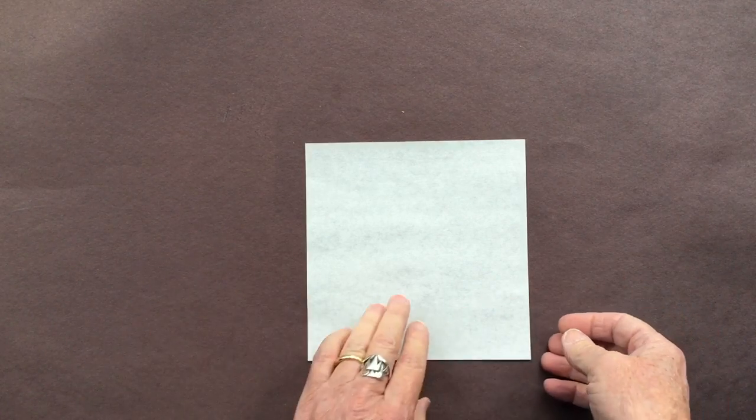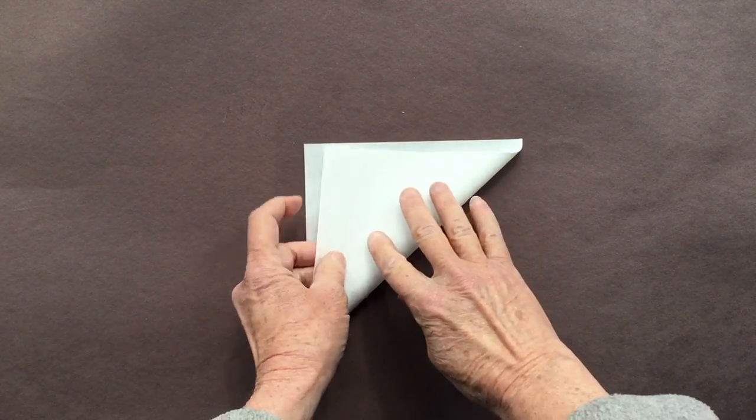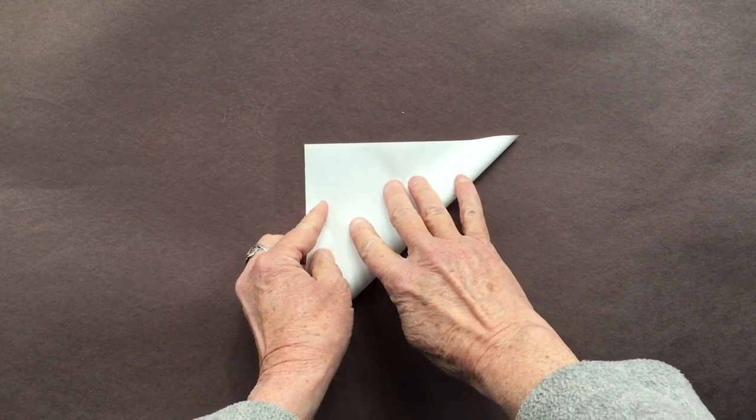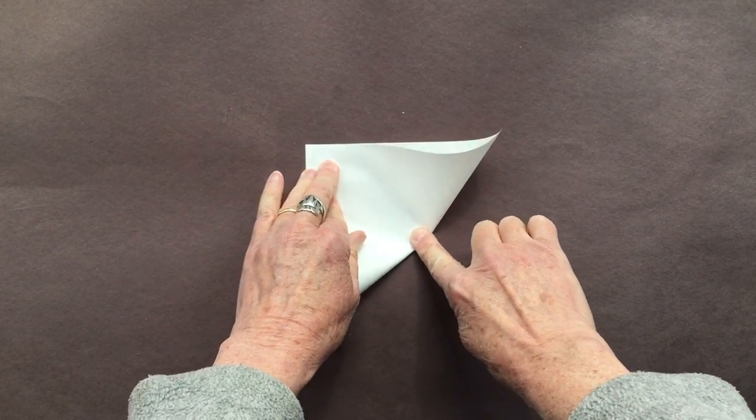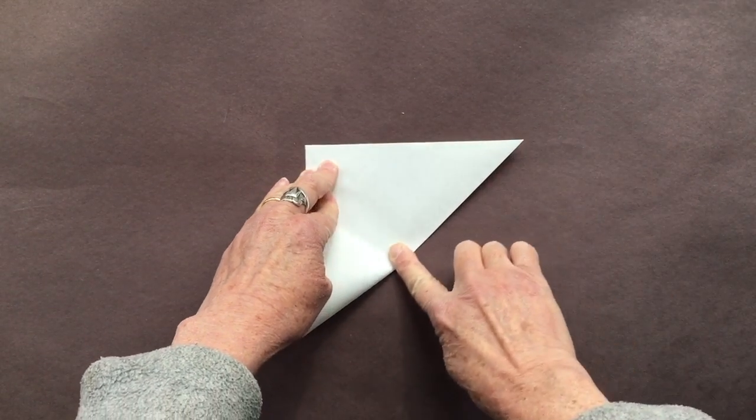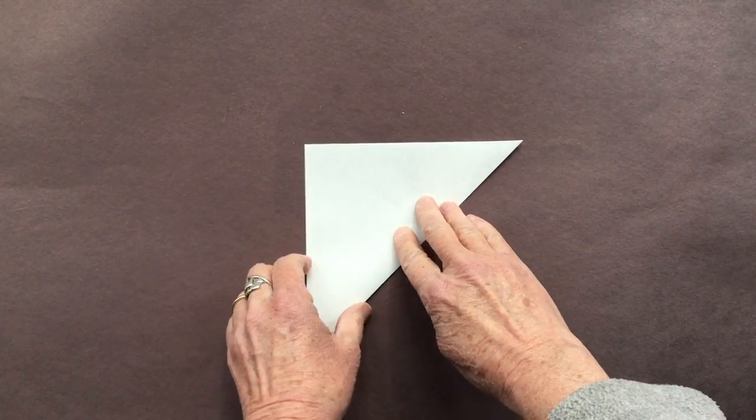When working with origami, it's best to work on a flat surface. When you make your folds, line up your corners and edges unless the instructions tell you otherwise.